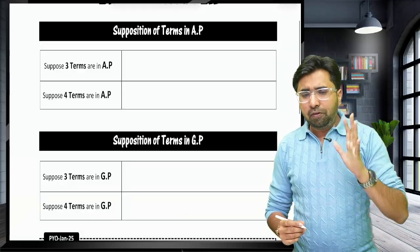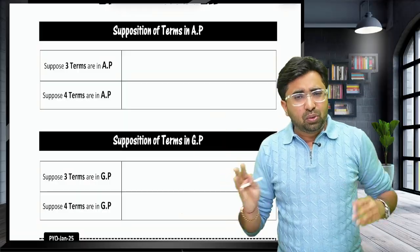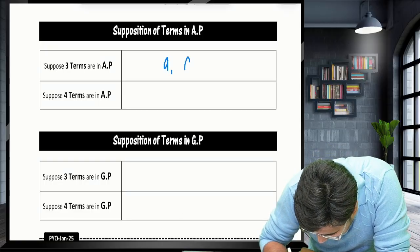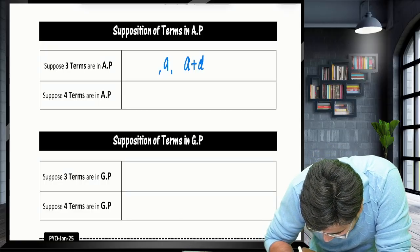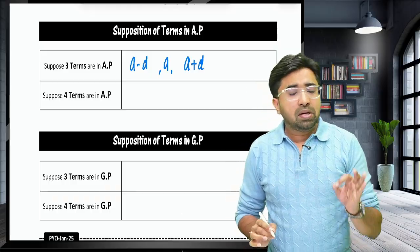Whenever we have to suppose 3 terms in AP, usually students assume A, A plus D, A plus 2D. No, you will not get the answer. Let's always assume A minus D, A, A plus D. In case of 3 terms, this supposition is very easy.